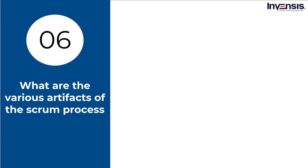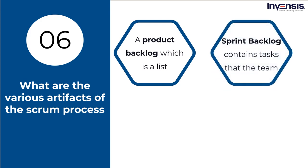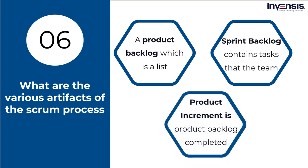What are the various artifacts of the Scrum process? First, a product backlog is a list of new features, updates to features, bug repairs, infrastructure improvements, and other activities that must be completed before a specific output is obtained. Second, the sprint backlog is a subset of the product backlog containing tasks the team is working on to meet the sprint goal. Third, a product increment is the total of all product backlog items completed in a sprint plus the previous sprint's increment value.